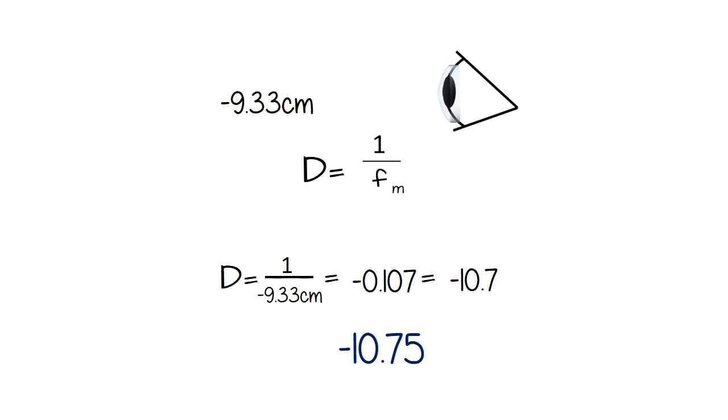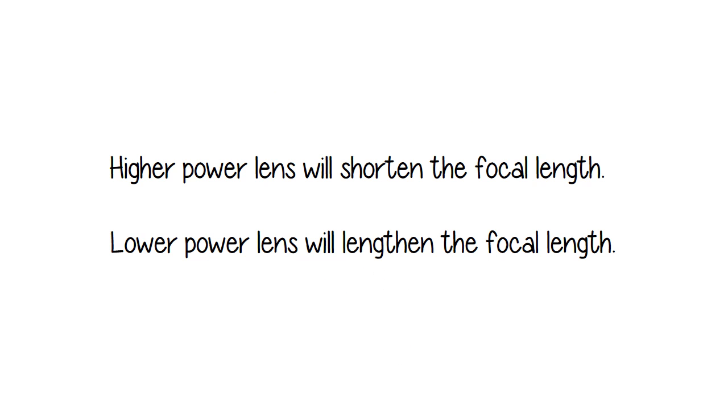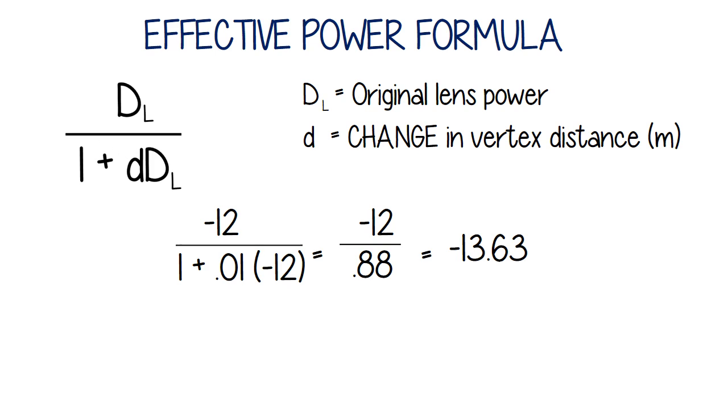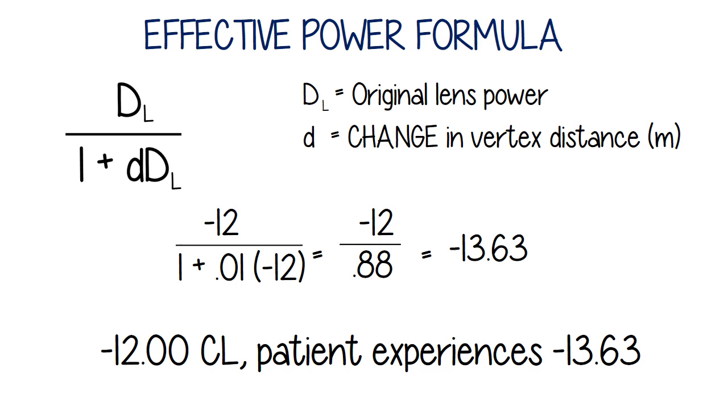When we had our hyperopic patient go from a plus 12 spectacle lens to a contact lens, we had to increase power to compensate. We went from a plus 12 to a plus 13.50. In this patient, a minus 12, same vertex distance, we're going from a minus 12 to a minus 10.75, we're decreasing strength. Let's take our myopic patient and figure out what would have happened if we just put a minus 12 contact lens on their eye instead of compensating. A minus 12 contact lens would have seemed like a minus 13.63 eyeglass lens.